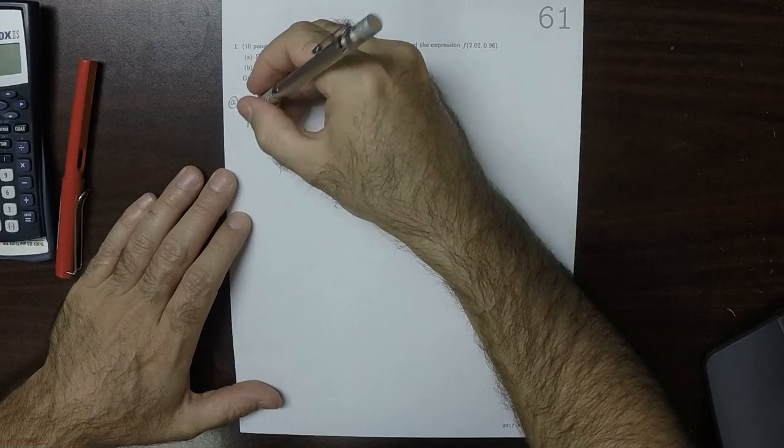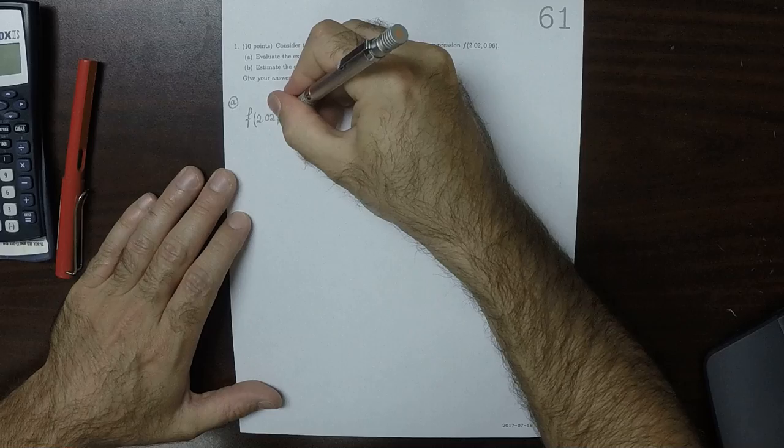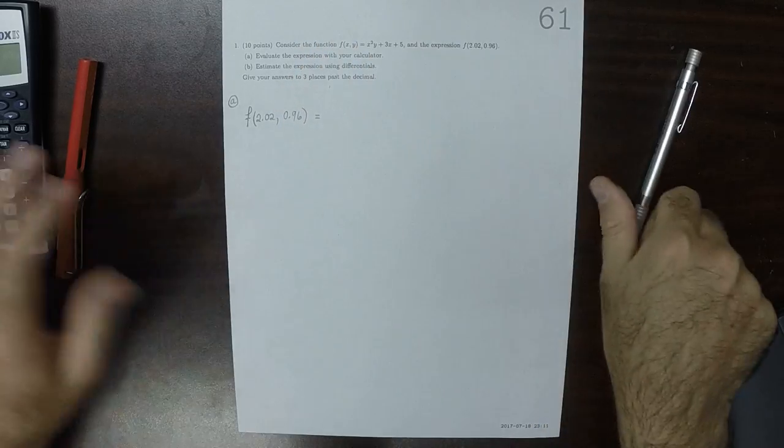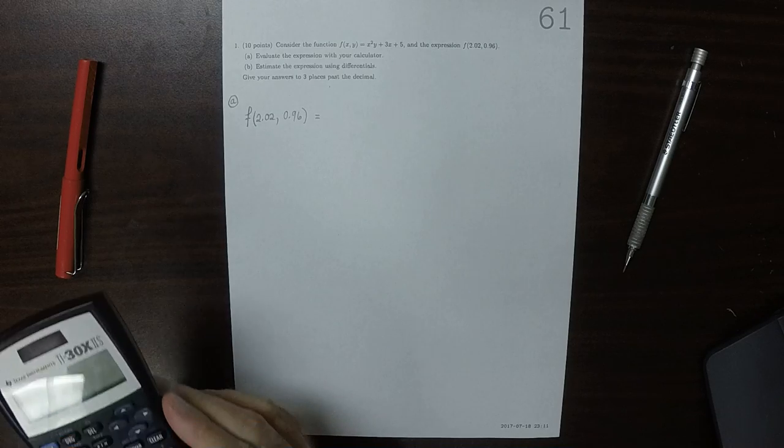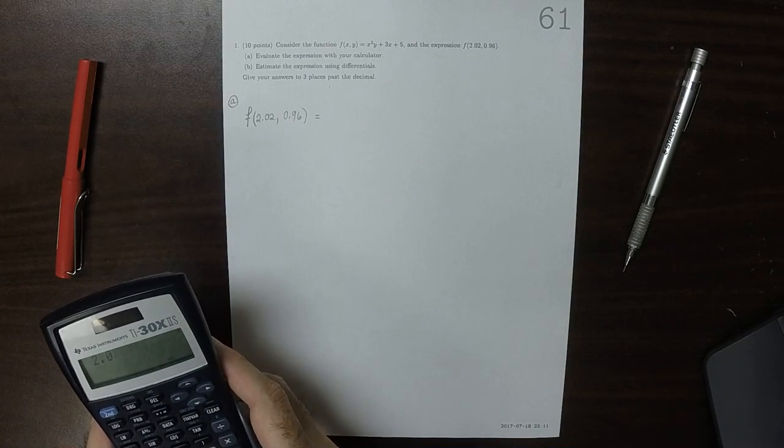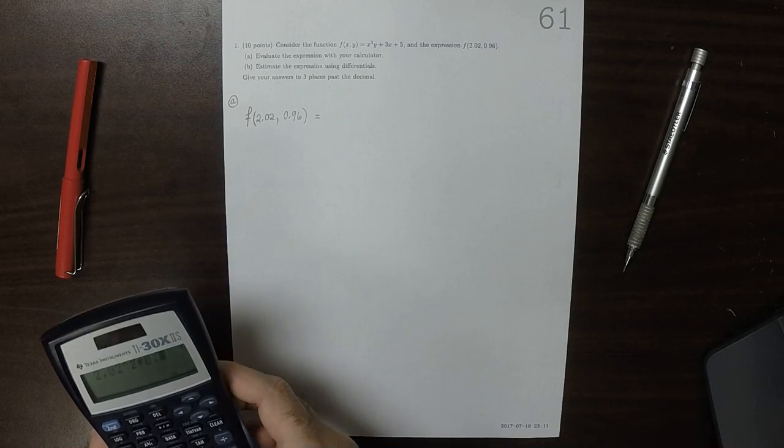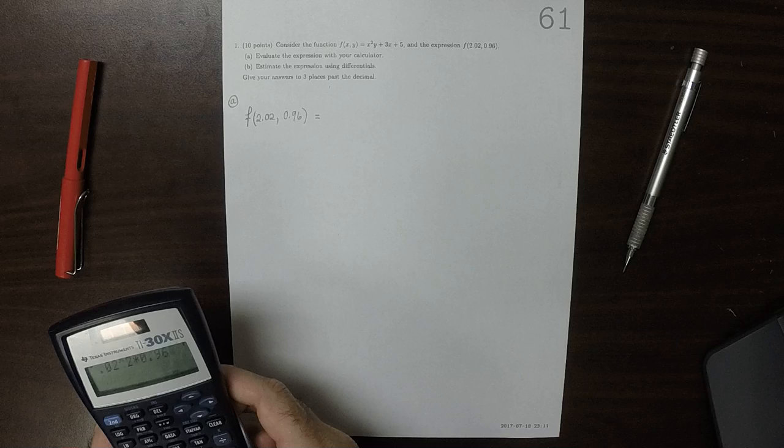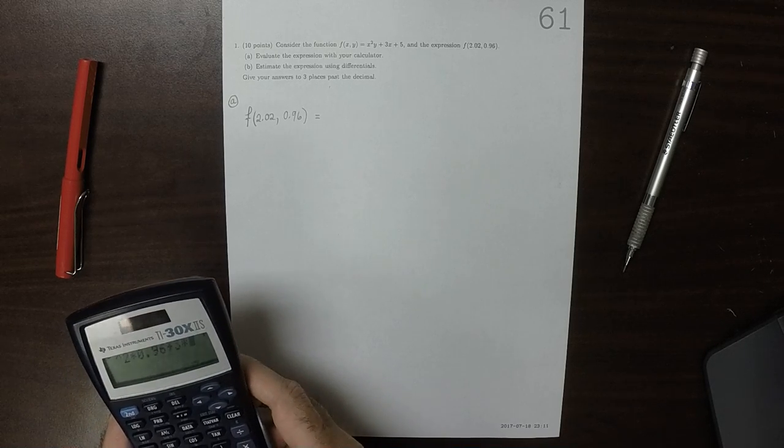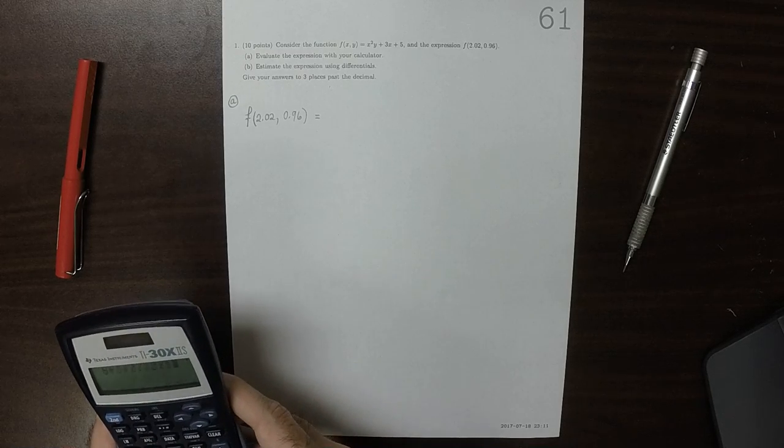So f of 2.02, 0.96. So that's 2.02 squared, times 0.96, plus 3 times 2.02, plus 5.